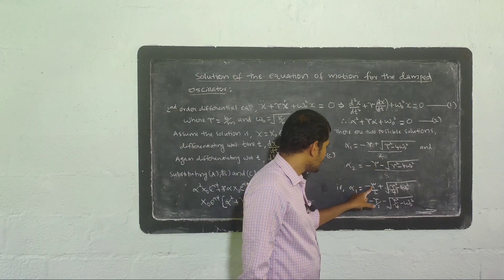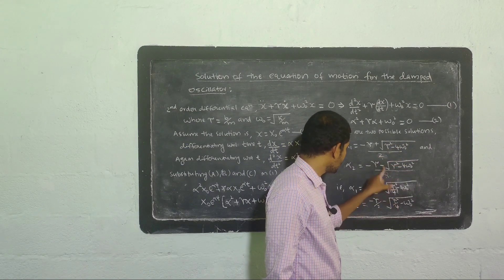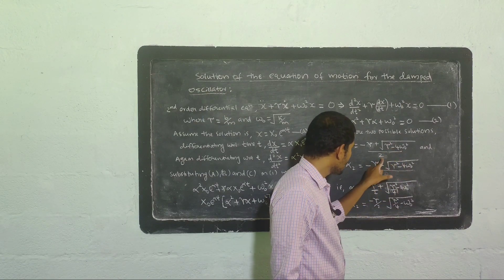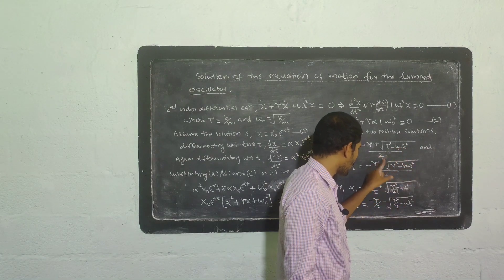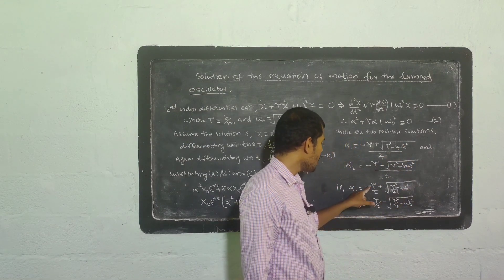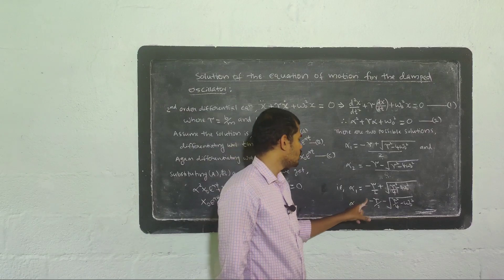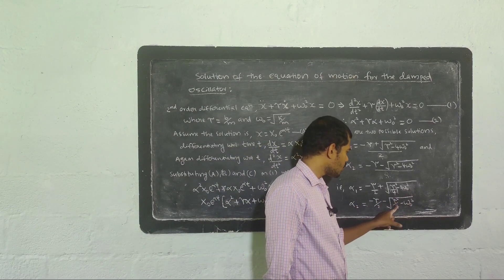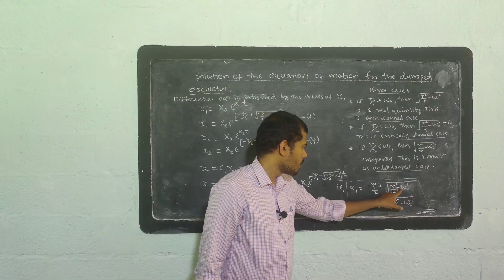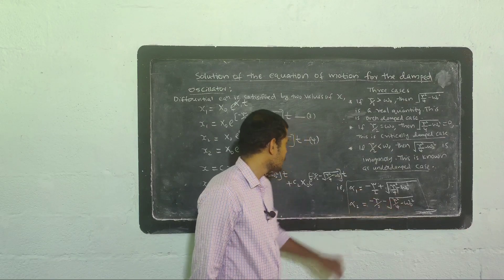Simplifying by dividing through by 2: we write 2 as root 4 in the denominator under the square root. Therefore alpha one equals minus gamma over 2 plus square root of gamma squared over 4 minus omega zero squared. Similarly, alpha two equals minus gamma over 2 minus square root of gamma squared over 4 minus omega zero squared.